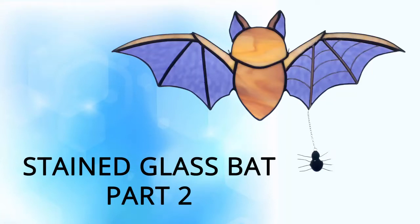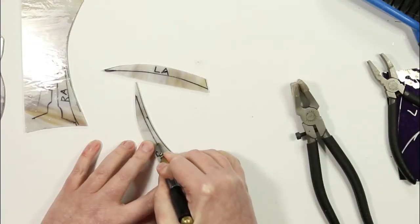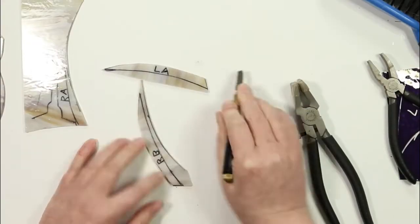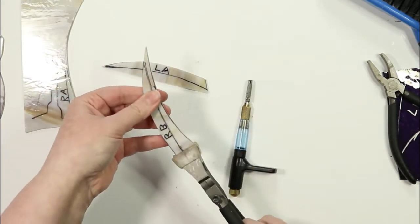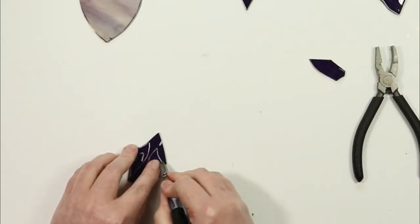Hello everyone, I'm Samantha Calder and this is part two of making a stained glass bat. If you missed the first video, there is a link in the description below. Go ahead and click on that to watch the first video before you start watching this one.